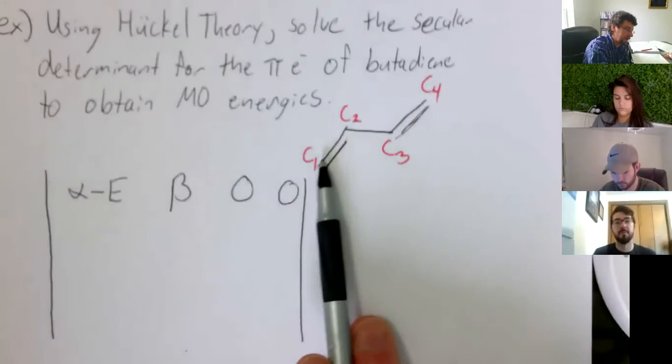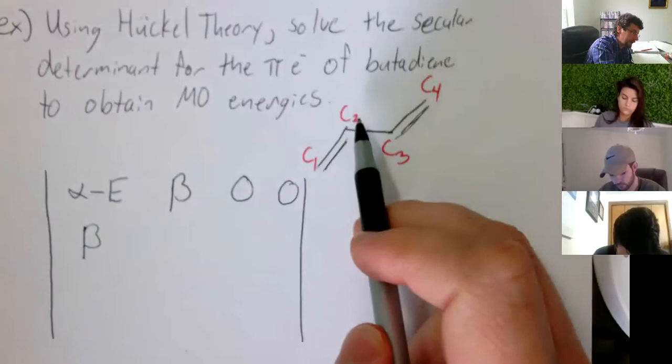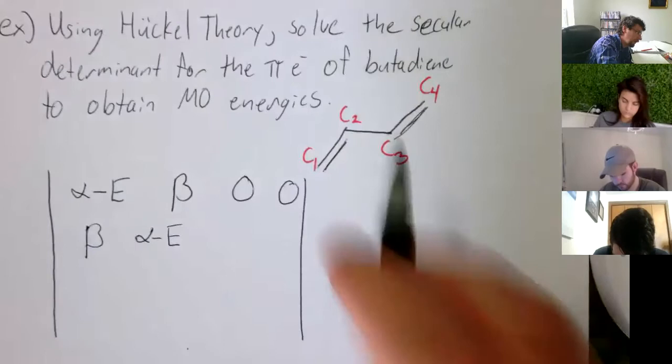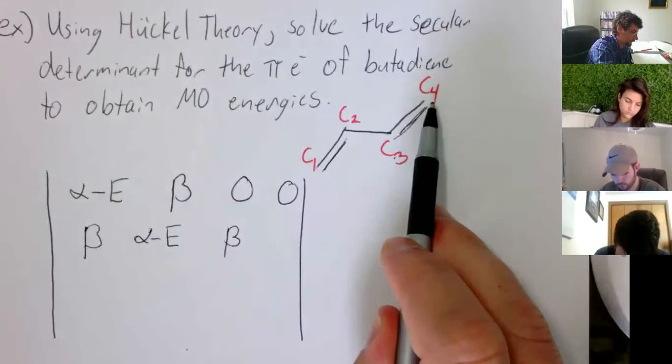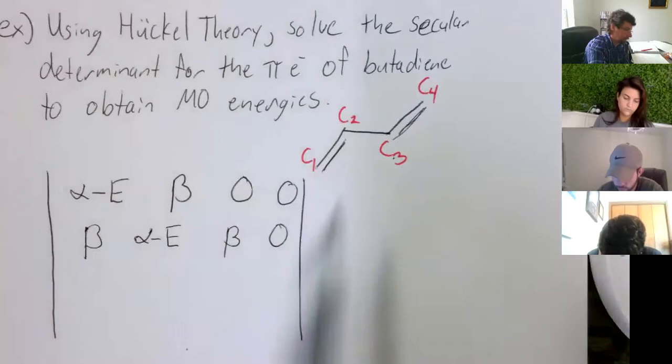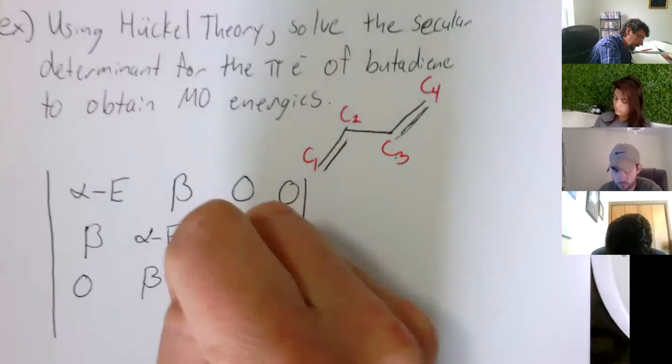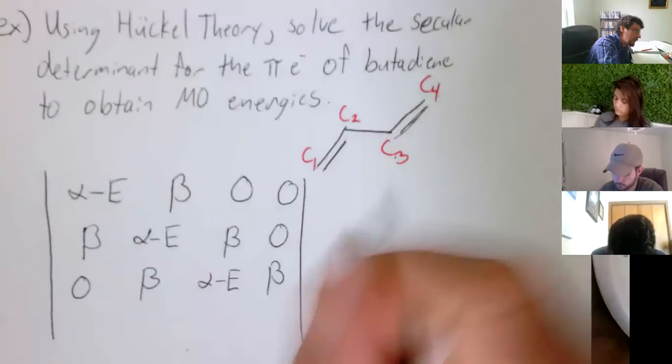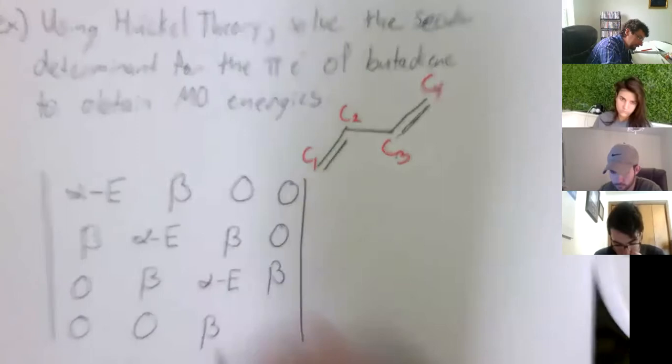Okay. Now, carbon two interacting with carbon one. What's this term going to be? Beta. Yep. Carbon two interacting with carbon two. Alpha minus E. Yep. Carbon number two interacting with carbon number three. Beta. Yep. Carbon number two interacting with carbon number four. Zero. Yep. Zero. Now, we're looking at carbon number three interacting with carbon number one. Zero. Yep. Carbon number three with number two. Beta. Yep. Carbon three with carbon three. Alpha minus E. Yep. Three with four. Beta. Mm-hmm. Now, four with one. Zero. Zero. Four with two. Zero. Four with three. Beta. Alpha minus E. Alpha minus E. Yep.